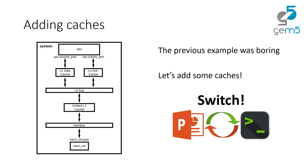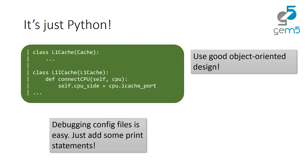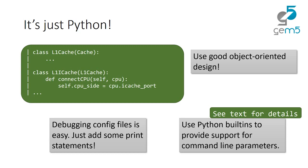The key point is that configuration is just Python. You can use good object-oriented design, throw in print statements to debug config files, and use Python built-ins like optparse for command line parameters. The learning_gem5 text has more details on this.